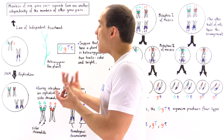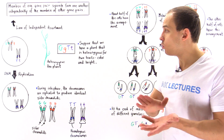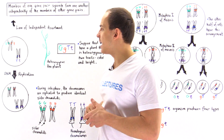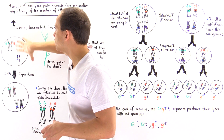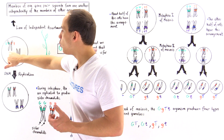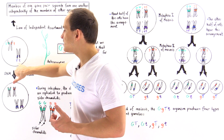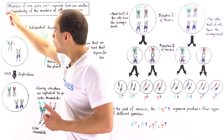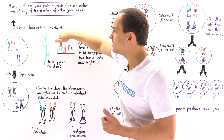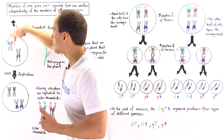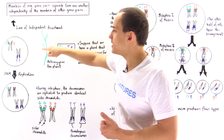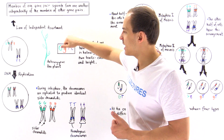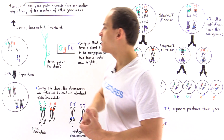If we examine the somatic cell of this pea plant, focusing only on the chromosomes that carry these genes, we get the following diagram. Within the nucleus, we have one homologous chromosome pair where one chromosome carries uppercase G and the other carries lowercase g. In the other homologous pair, one chromosome carries uppercase T and the other carries lowercase t.